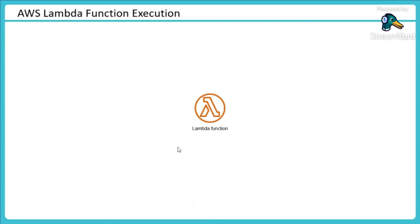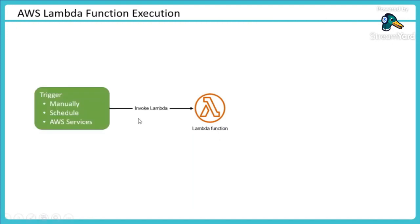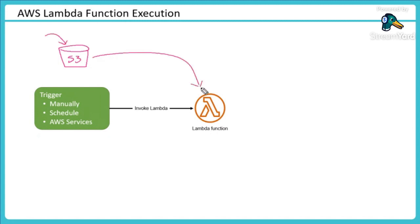Let's see how Lambda actually executes. When you have a Lambda function, it can be triggered — we use the word 'invoking' the Lambda function. It could be manually triggered, it could be scheduled, or a service can talk to a Lambda function and invoke it. For example, I have an S3 bucket, and as soon as a file is uploaded into S3, it should go ahead and talk to my Lambda and execute it.